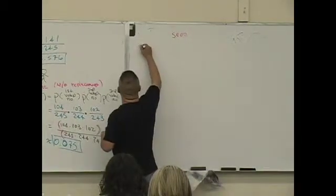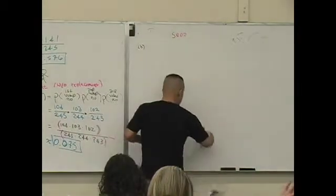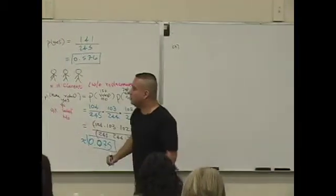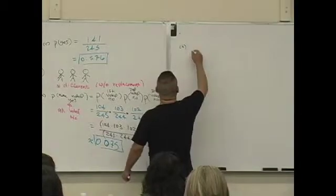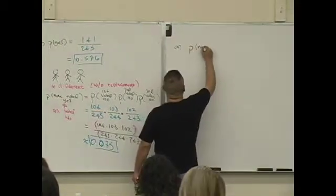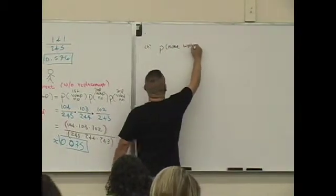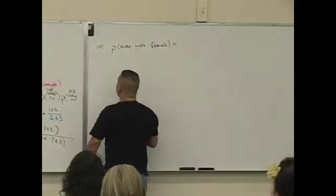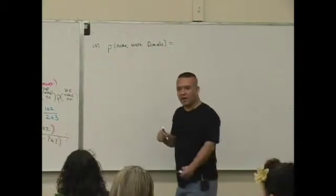B, what does B say? Anybody know what does B say? Probability that none were female. What does that mean for none to be female? They're all men.